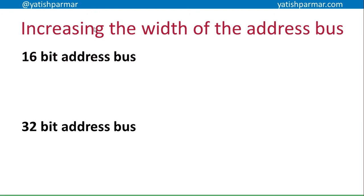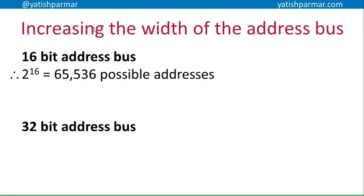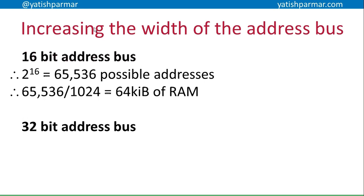If I increase the width of the address bus, I'll have a wider range of possible addresses and can address more memory. I want you to pause and do the same calculation for 16-bit and 32-bit, then play again. With a 16-bit address bus, I have 2 to the 16, which is 65,536 possible addresses. Dividing by 1024, and assuming each location contains one byte, that means I've got 64K of RAM that I can address.